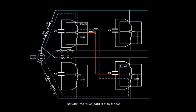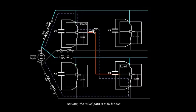Now assume that this particular line is a 16-bit bus. When we say this particular line has been charged from logic zero to logic one, the driver is sending a signal from logic zero to logic one, so this complete line has to retain this particular state so that the load receives the same signal.